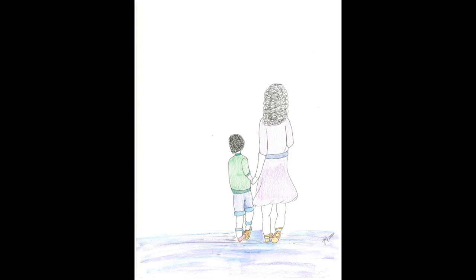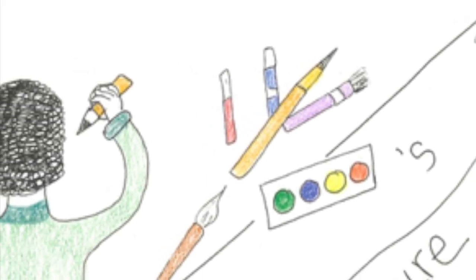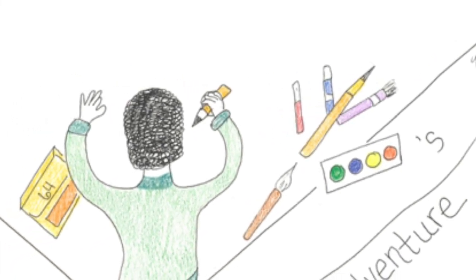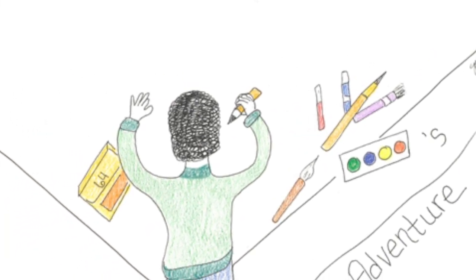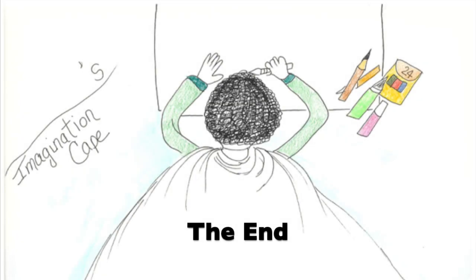He had been very sad to lose his imagination cape, but now he smiled. Maybe when he went running tomorrow he would find it again. In his room, Milo sat on the floor and reached for his box of pens and pencils and crayons. Then, being the very brave and adventurous boy that he was, he opened the lid and began to make art again. The end.